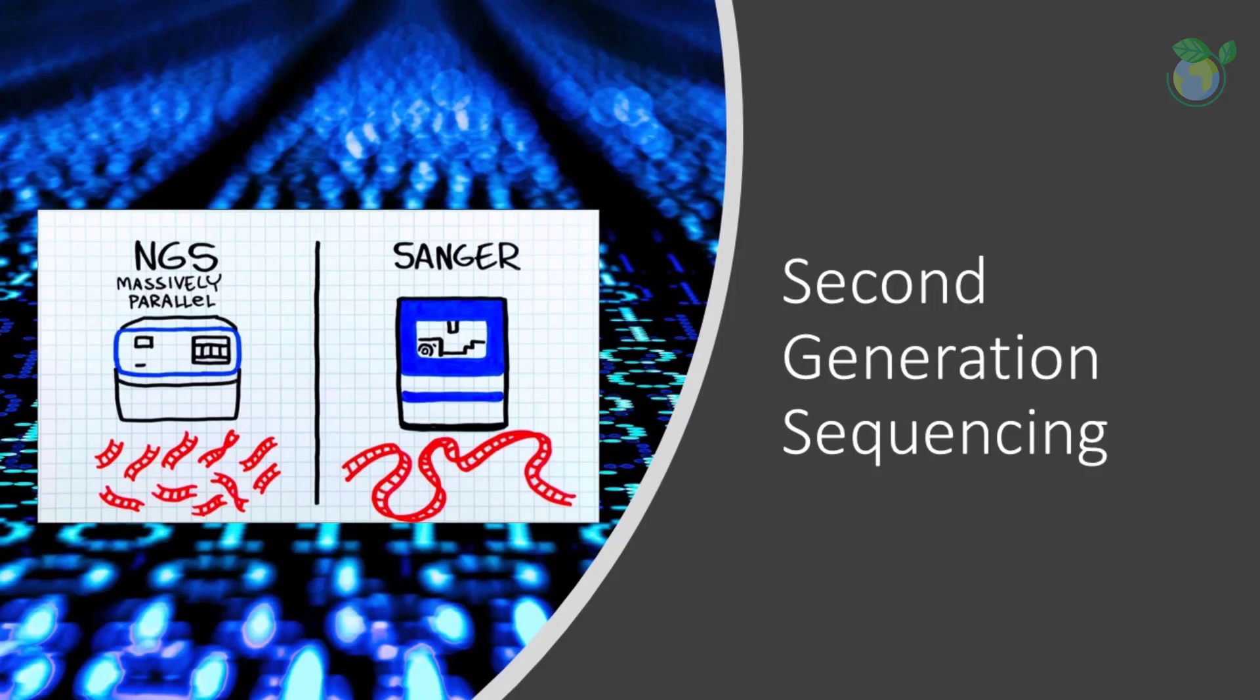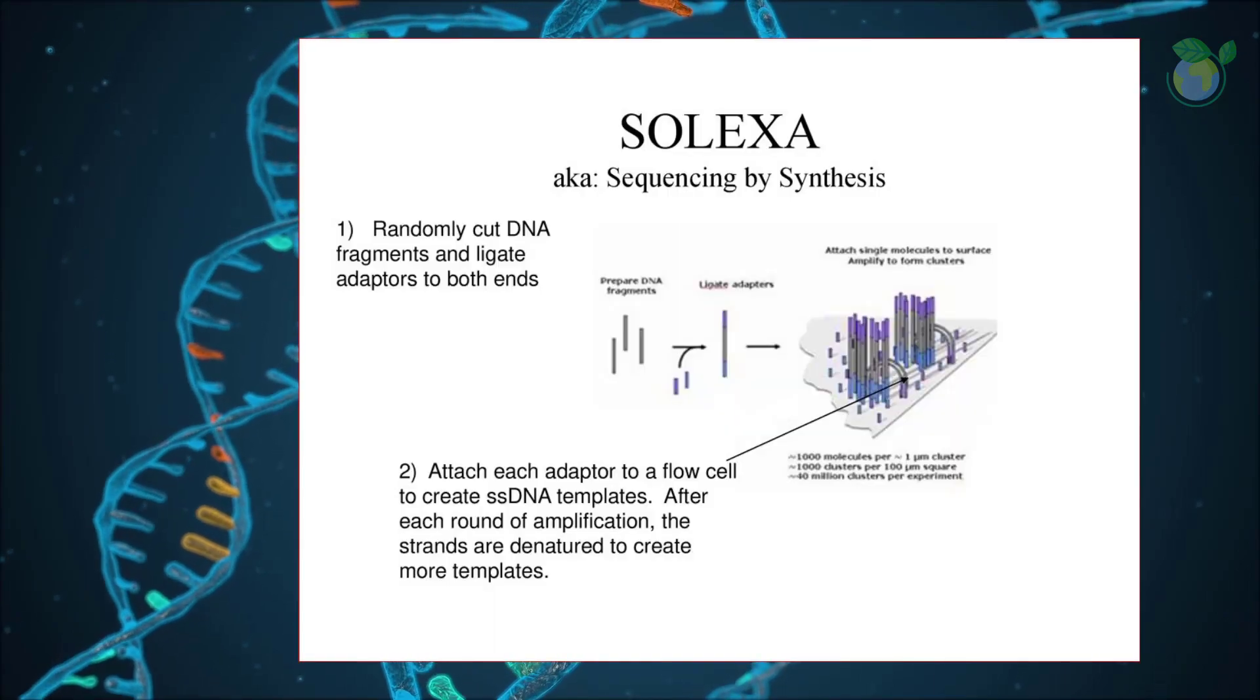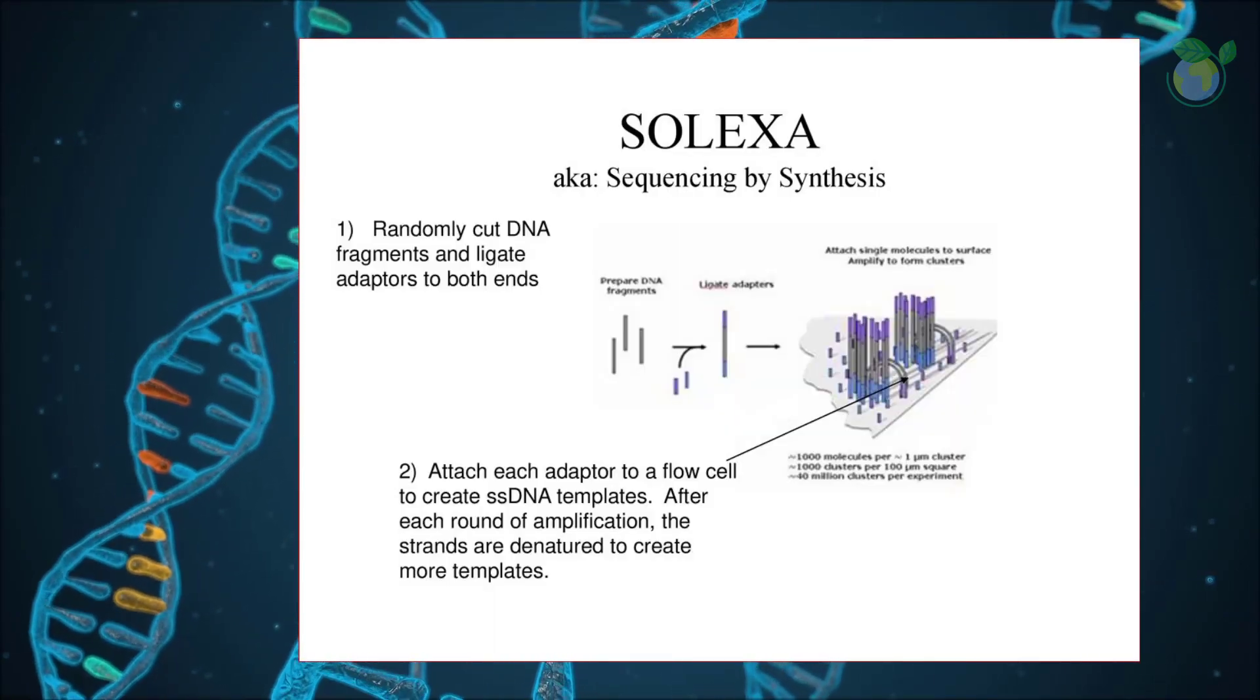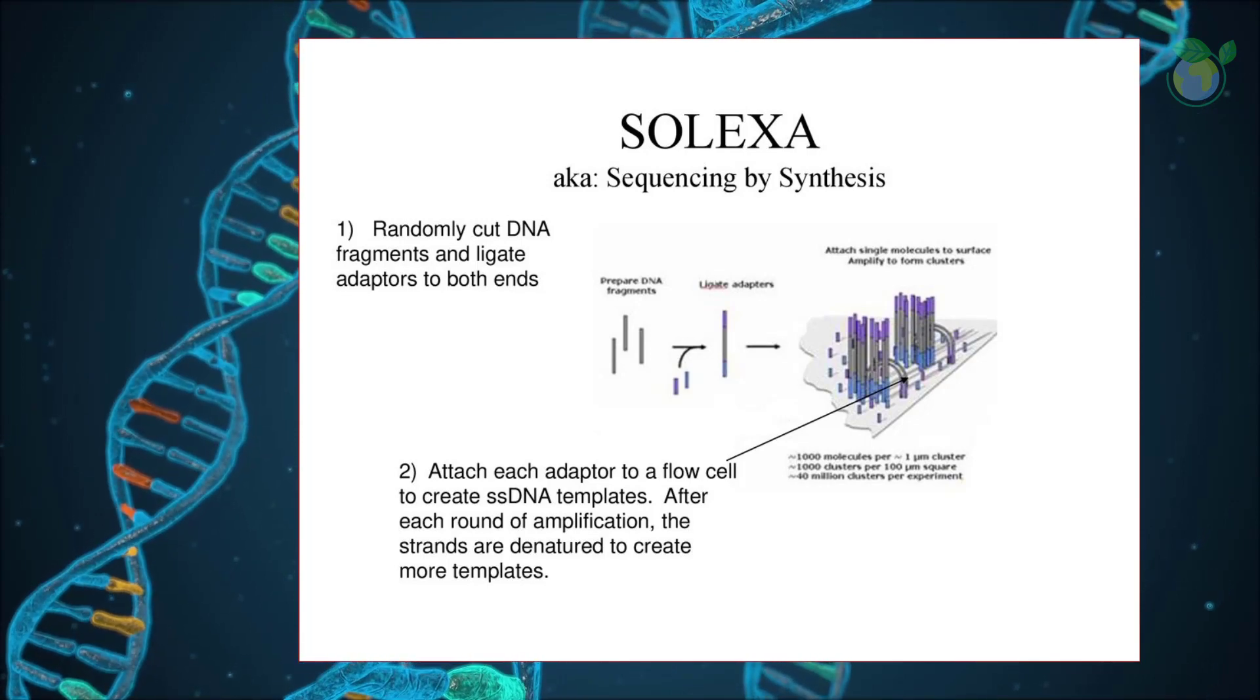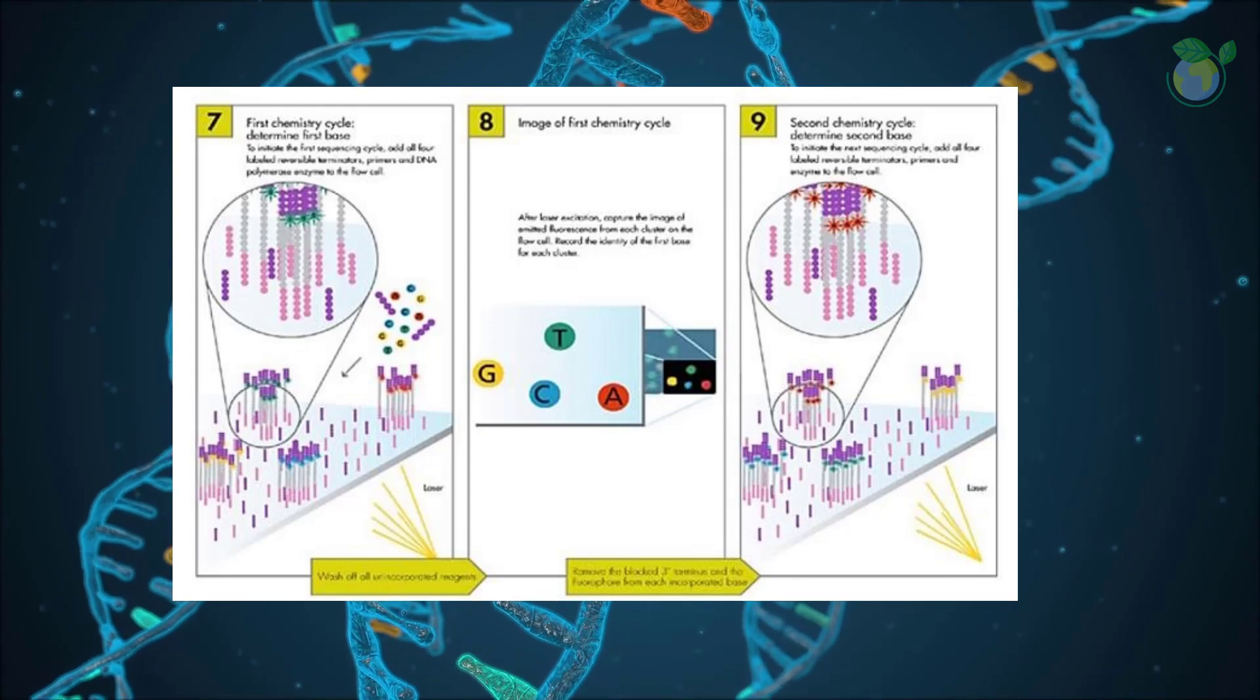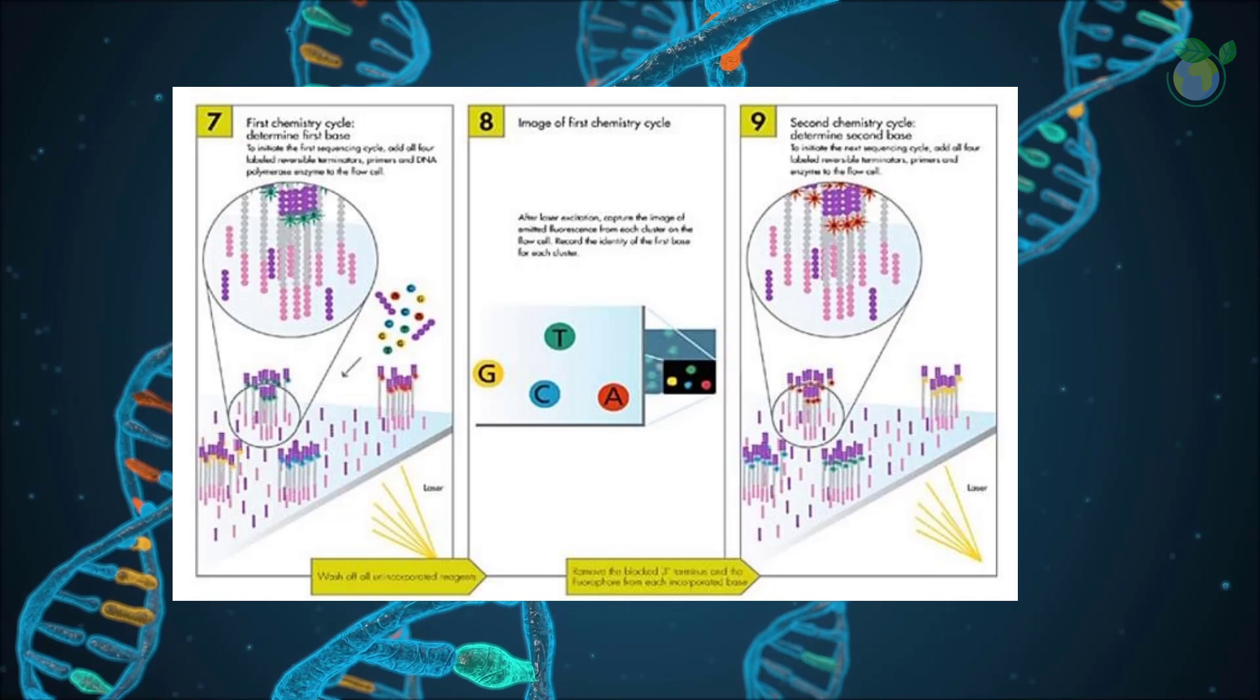Second-generation sequencing: short reads become fast and efficient. One of the major players in the development of next-generation sequencing, NGS, was a company called Solexa, which was later acquired by Illumina. The innovation of the Illumina platform was bridge amplification, which enabled the formation of dense clusters of amplified fragments across a silicon chip. Amplification of the original single molecule into a large cluster of many copies made it possible to detect a fluorescent signal.